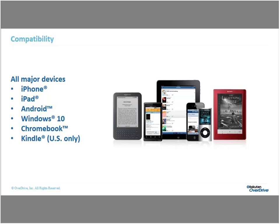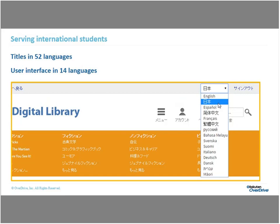We can also serve an international population. We have our user interface available in 14 different languages so students can easily navigate the page and find the content they need. The actual content goes even further — you can add titles in up to 52 different languages, not only for students learning English but also for language learning programs. For example, English students who want to learn Spanish. There's a lot of flexibility on what you can do, and we want you to be specific with this platform.